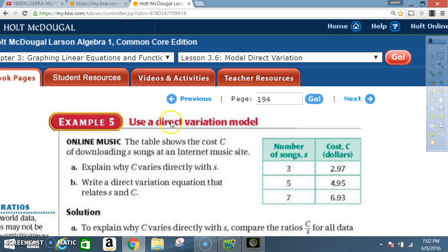Example 5. Use a direct variation model. Online music. The table shows the cost, C, of downloading S songs at an internet music site. A. Explain why C varies directly with S. B. Write a direct variation equation that relates S and C.